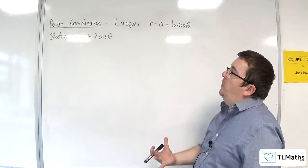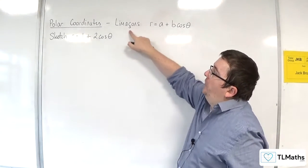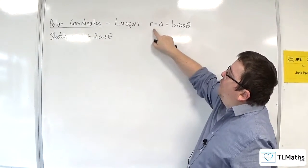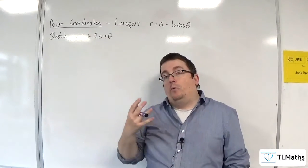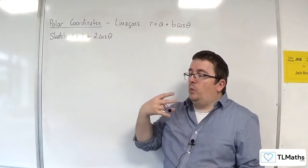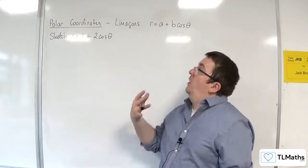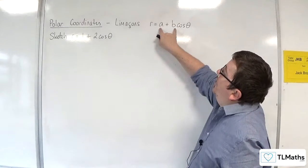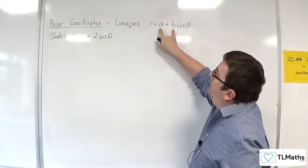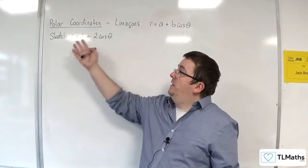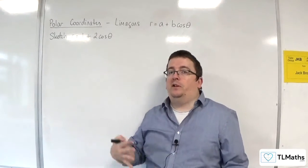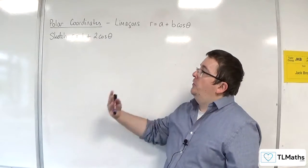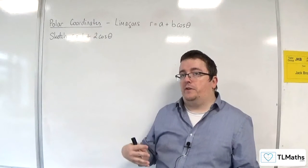So we're going to be looking at a particular type of polar curve, limaçons. And they're of the form r equals a plus b cosine theta. And what we're going to do is consider what happens when we change the values of a and b. So we're going to look at, firstly, r equals 1 plus 2 cosine theta, then r equals 2 plus 2 cosine theta, and then r equals 3 plus 2 cosine theta.